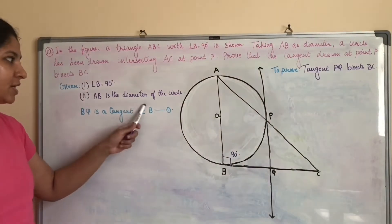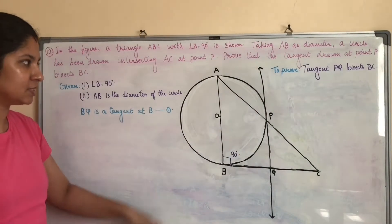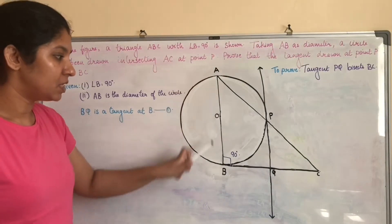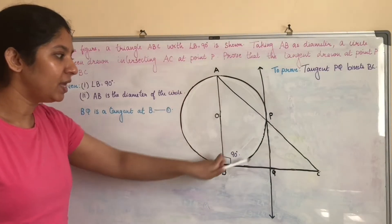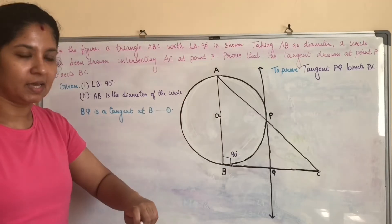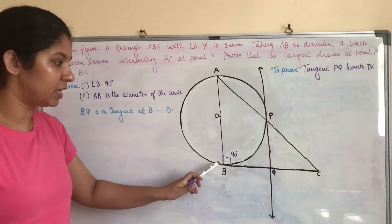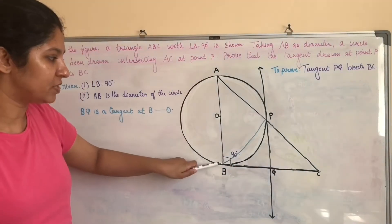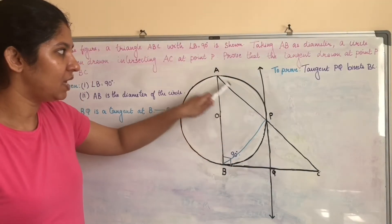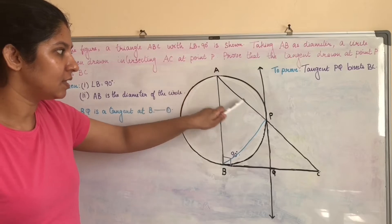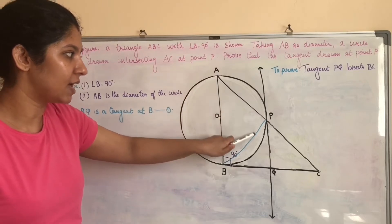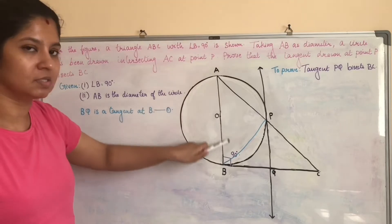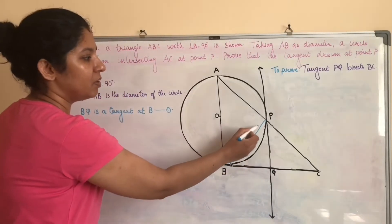Consider the second point: AB is the diameter of the circle. The angle subtended by the diameter AB at any point on the circle is 90 degrees. Construction: join BP. Since AB is the diameter, angle ABP is subtended by the diameter, and by theorem this angle will be 90 degrees.